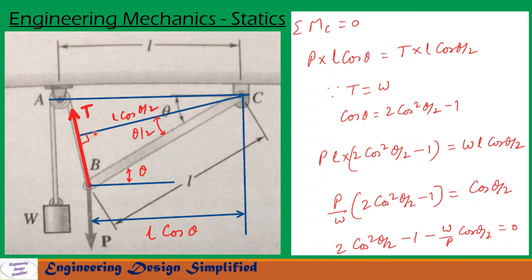Now let us take moments about C. T is acting in this direction and P is acting vertically downwards. The moment equation about C is sigma MC equals zero. The moment due to P about C is P multiplied by the horizontal distance from B to C, which is L cos theta. This angle is theta, so the horizontal distance from B to C is L cos theta.